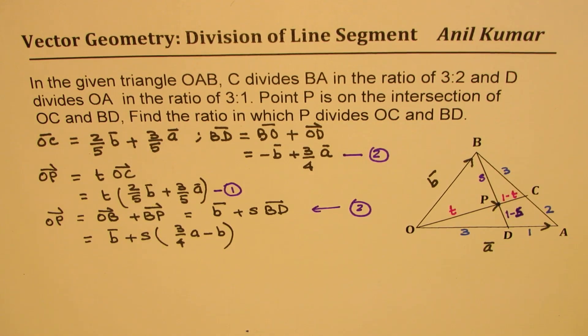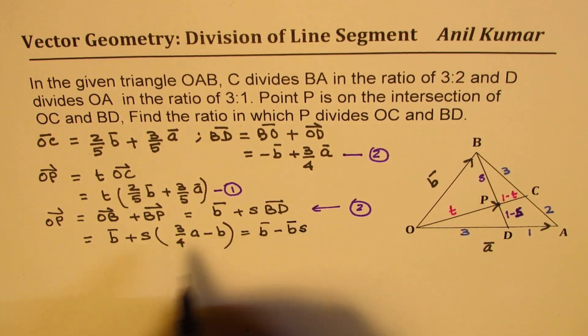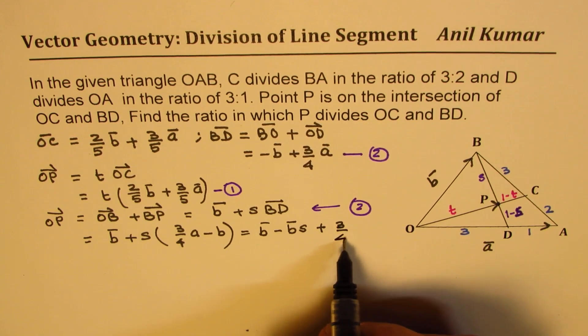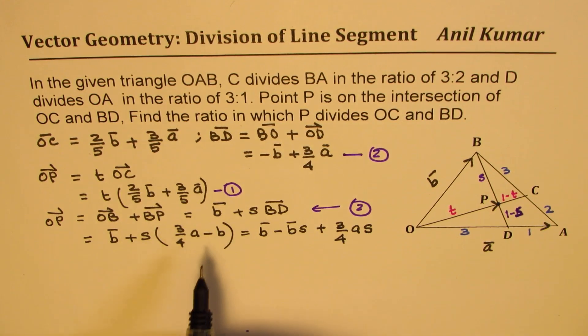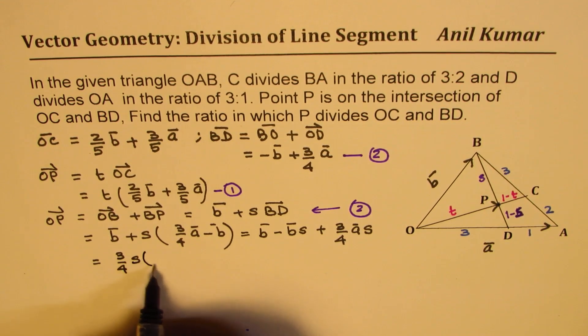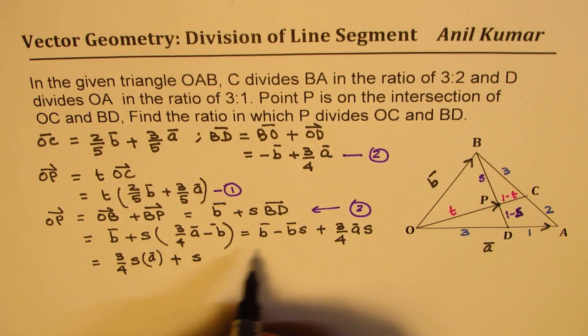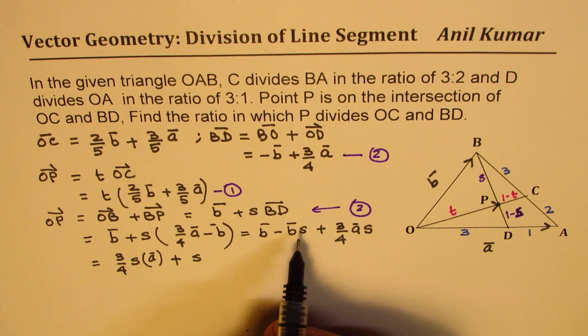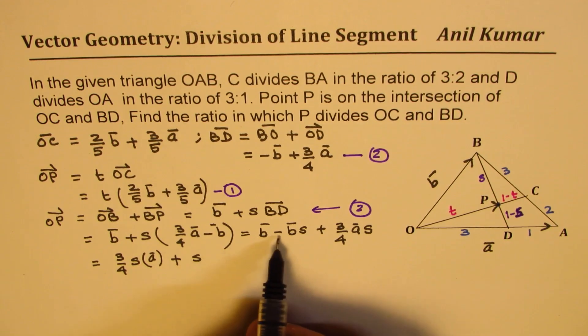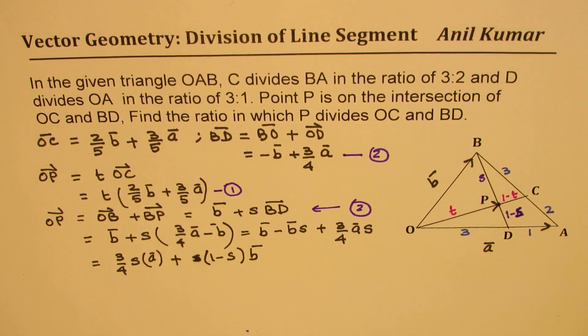Now, let us rearrange this so that we clearly get what A and B terms are. OP can now be written as B plus S times BD is this. Let me rewrite this as (3/4)A minus B. So we get B minus BS and we get plus (3/4)AS. So A and B are our vectors. So I could write this as (3/4)S times vector A. We can take B common. B is common. We get 1 minus S. So 1 minus S times B. That's what we get here. Let's call this as our equation number 3.